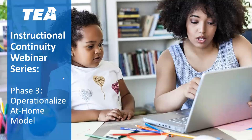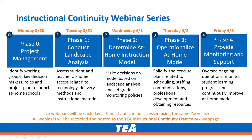We've been working through a series of phases this week. On Monday we talked through Phase 0 — project management. On Tuesday we went through Phase 1 — conducting a landscape analysis. Yesterday we talked through Phase 2 — determining the at-home instructional model. Today we're talking about operationalizing that model, and tomorrow we'll have another webinar at 9 a.m. using this same Zoom link.